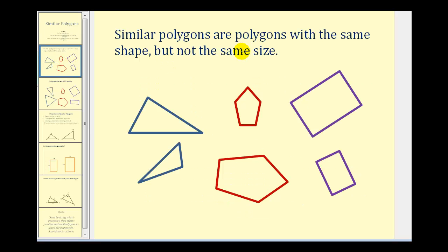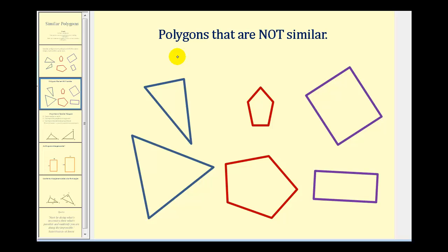Similar polygons are polygons with the same shape, but not the same size. Here we see two similar triangles, two similar pentagons, and two similar rectangles. They're the same shape but different size. To contrast this, here are some polygons that are not similar.